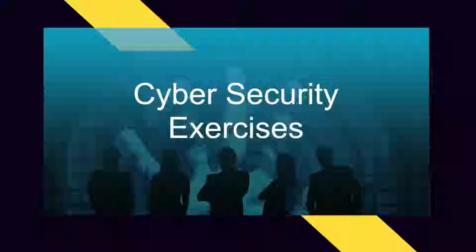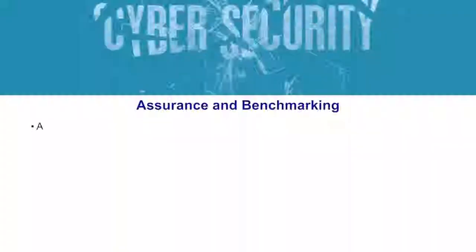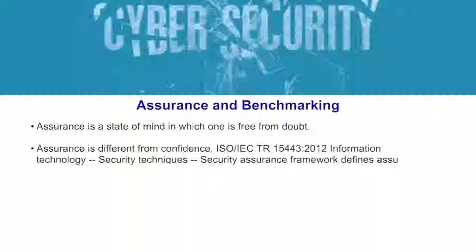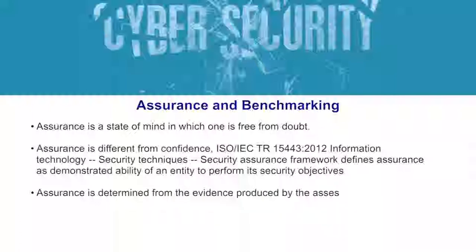Exercise is also used for improving the posture of an entity by identifying the gaps and creating improvement plans. Assurance is a state of mind in which one is free from doubt, and this is different from confidence. It is defined in an ISO standard as the demonstrated ability of an entity to perform its security objectives — meaning it is supported by evidence. So assurance is determined from evidence produced by the assessment process of an entity, and we must have some assessment method to generate that evidence.